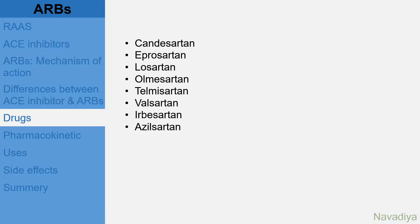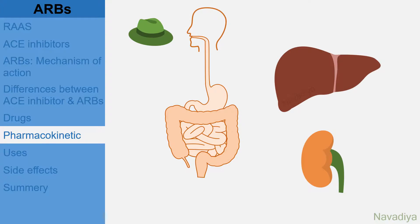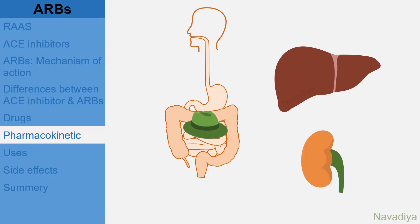Drugs in the ARB class are Candesartan, Eprosartan, Losartan, Olmesartan, Telmisartan, Valsartan, Irbesartan, and Azilsartan. Talking about pharmacokinetics, they are mostly given orally and elimination occurs by hepatic and renal routes.